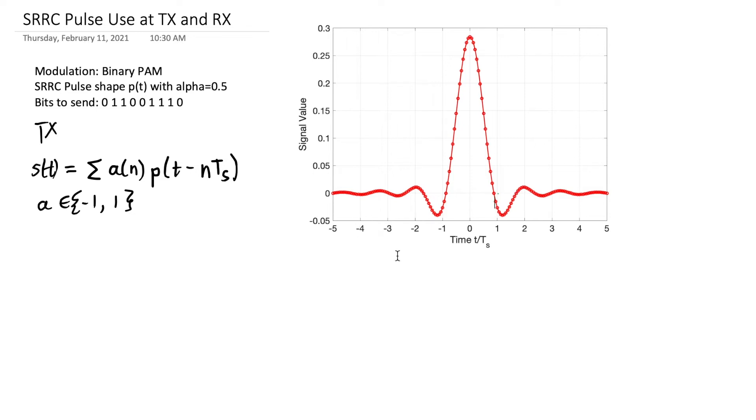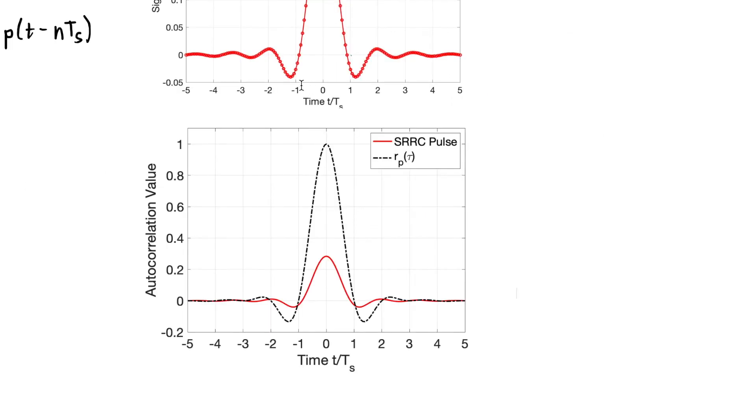This should remind you that the pulse shape itself doesn't take 0 values at integer multiples of T sub s. It's the autocorrelation function of the square root raised cosine pulse shape that takes 0 values at integer multiples of T sub s. To show you that, I'll bring up this square root raised cosine pulse shape, the same one plotted in red. But in addition, I plotted the autocorrelation function of the square root raised cosine pulse shape. The autocorrelation function is the square root raised cosine convolved with itself at different time delays.